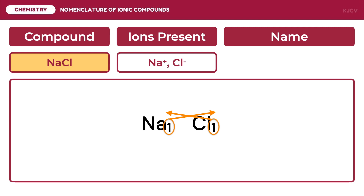To check if these charges are correct, we can use the group numbers. Sodium is in group 1A, so as a type 1 cation, it will have a positive 1 charge. Chlorine is in group 7A; being a monoatomic anion, we subtract 8 to get its charge, giving us negative 1. Na⁺ is sodium ion. Cl⁻, on the other hand, is the ion formed by chlorine; since this is an anion, we write it as chloride ion. Therefore, the name of this compound is sodium chloride.